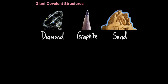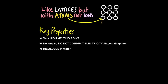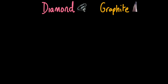Finally, let's look at giant covalent structures. The most common ones you need to know are diamond, graphite, and silicon dioxide (sand). Giant covalent structures are very much like ionic lattices in that you get huge sprawling structures in a regular arrangement, but it's atoms sharing electrons — not ions. Because of their super large size compared to simple molecules, they have a very high melting point, no ions so they do not conduct electricity (except graphite), and they are insoluble in water.